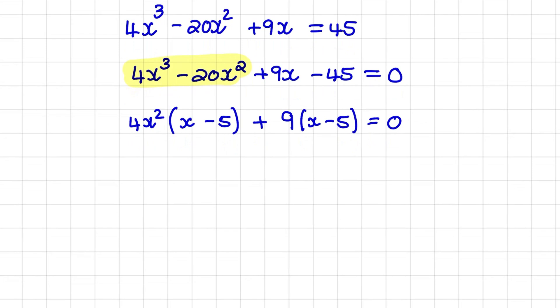So we can continue to factor by taking out a greatest common factor in my two terms now. So that'll be x minus 5 times 4x squared plus 9 equal to 0.